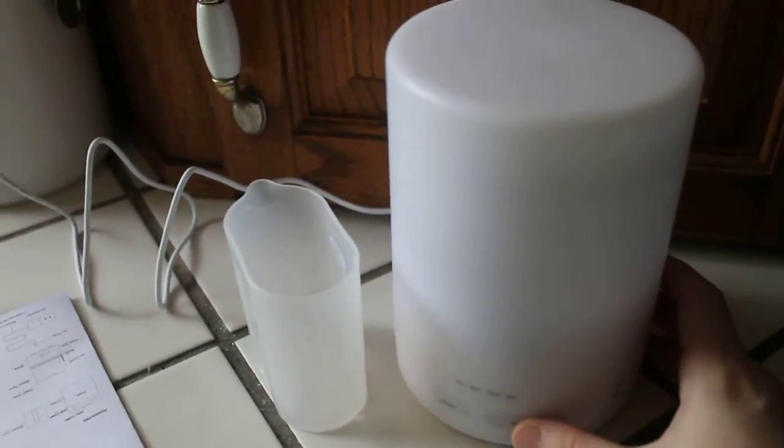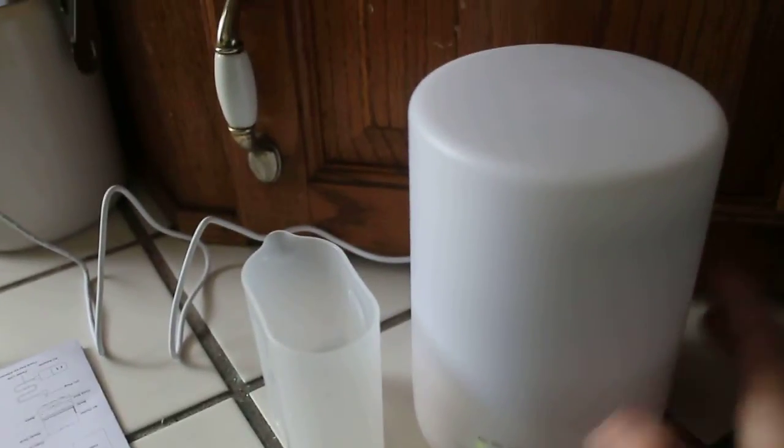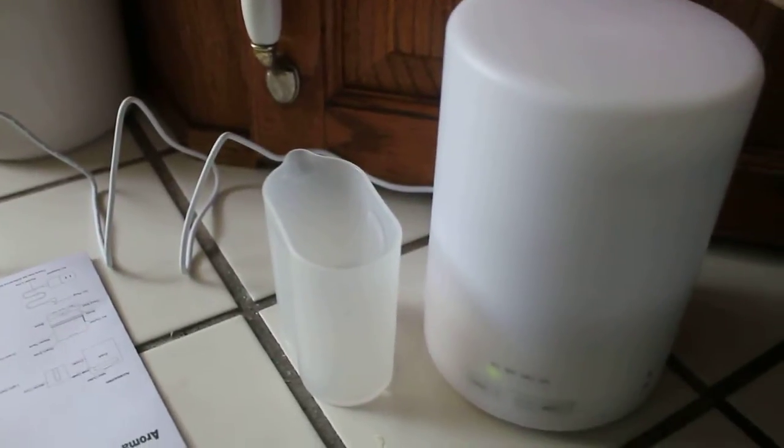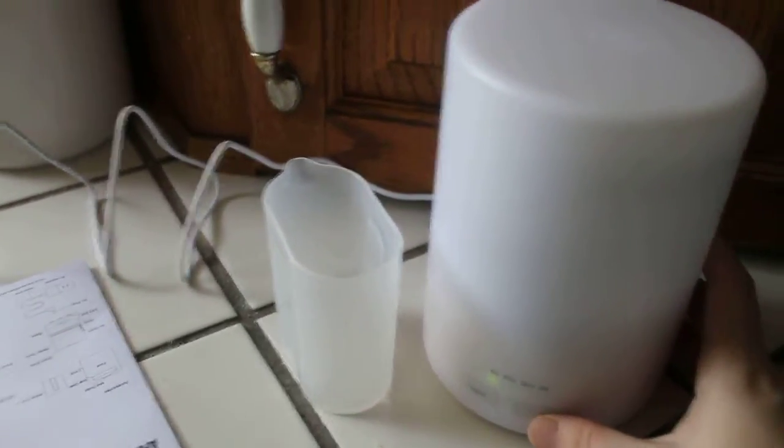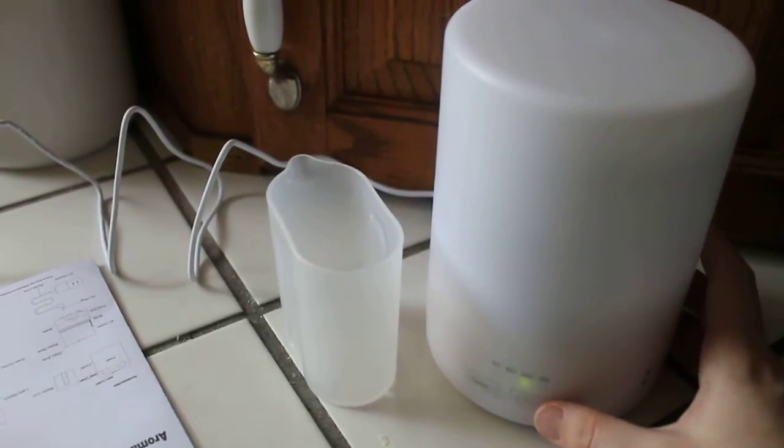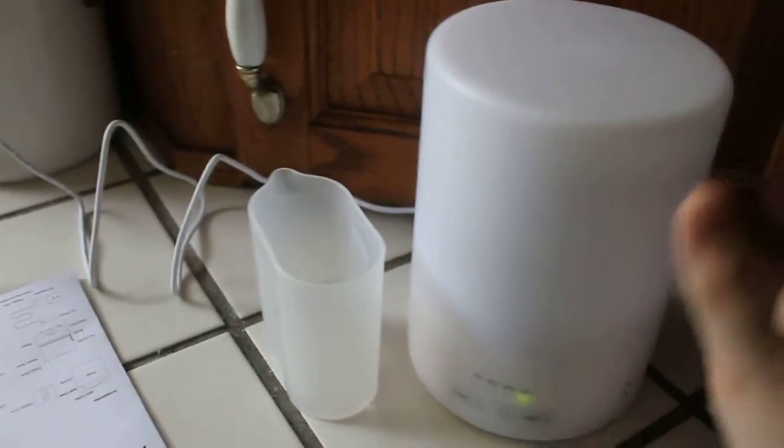Here you hold the mist button for two seconds and it comes on. You can set it to 60, 180 which is two hours, or 360 which is three hours, or just simply on so it doesn't turn off at all until you tell it to.